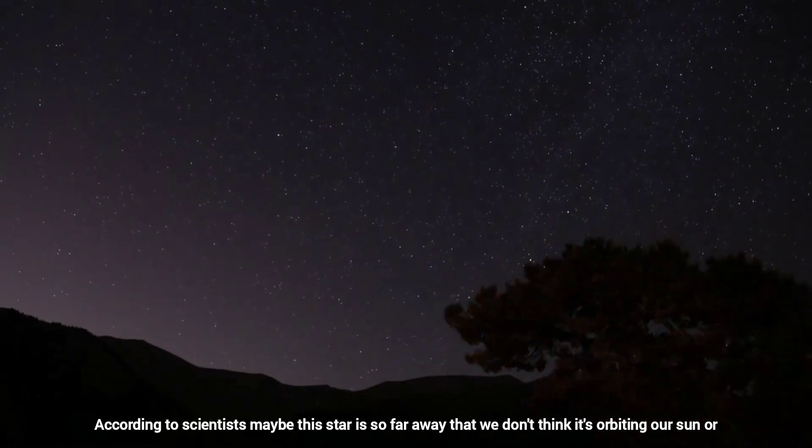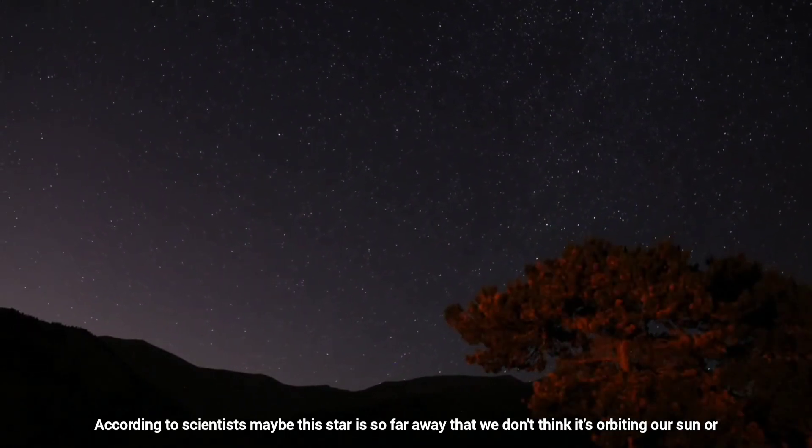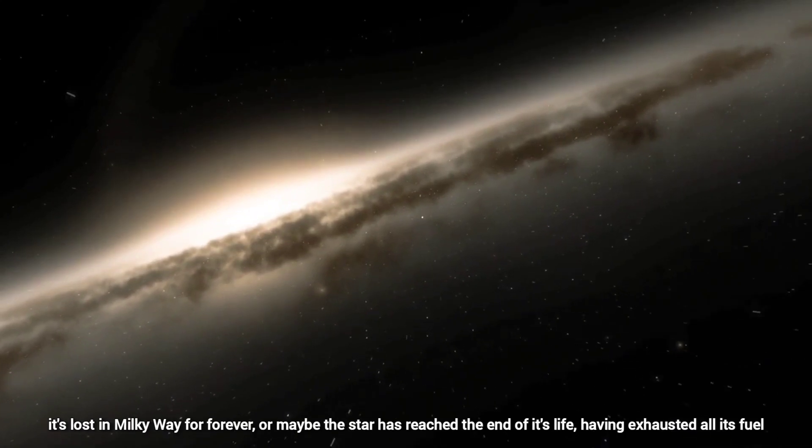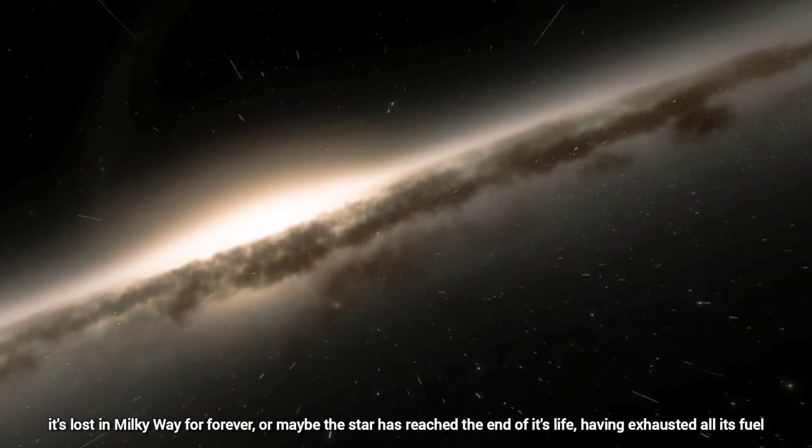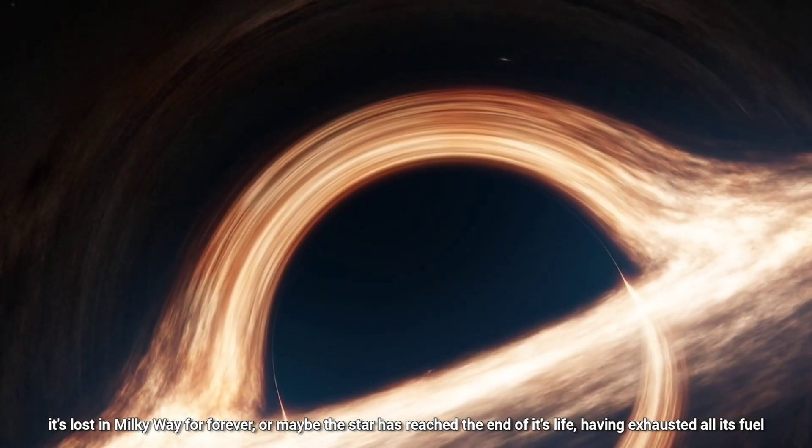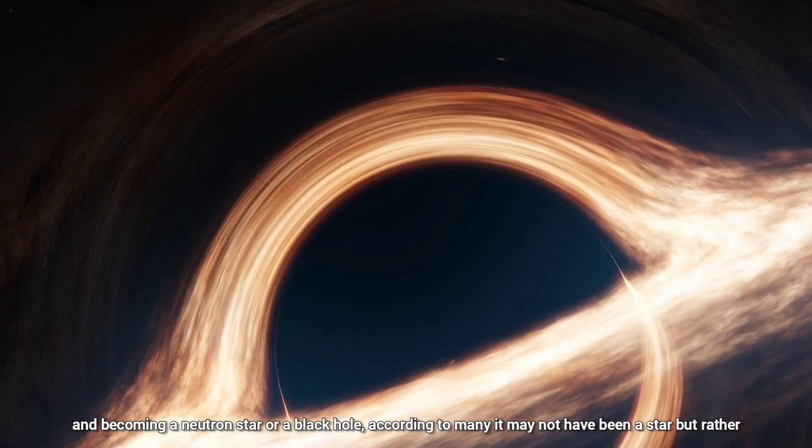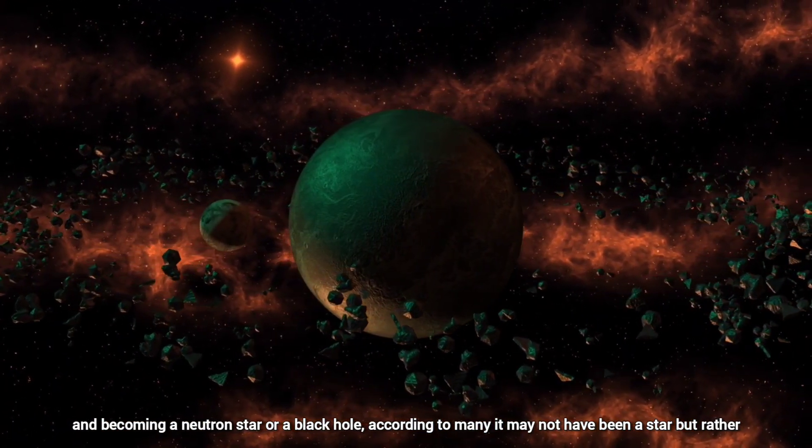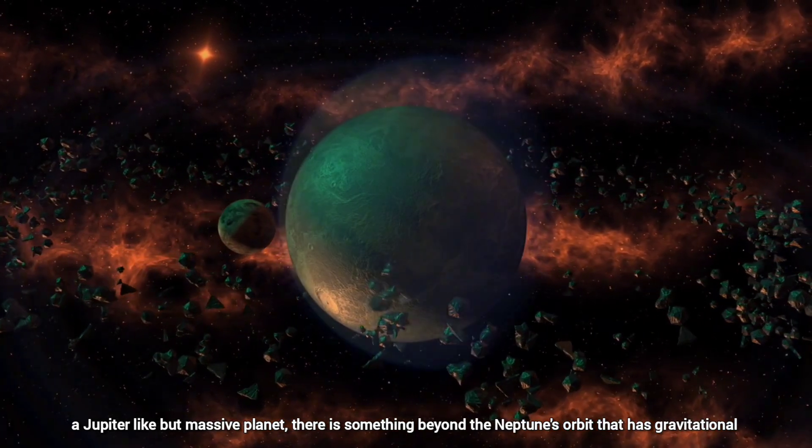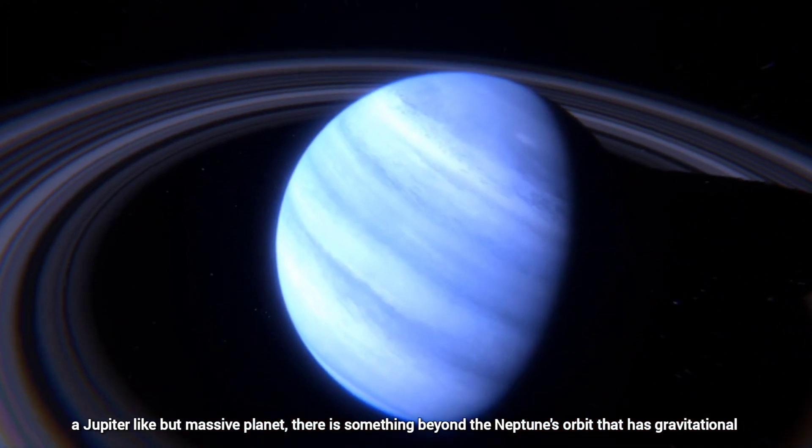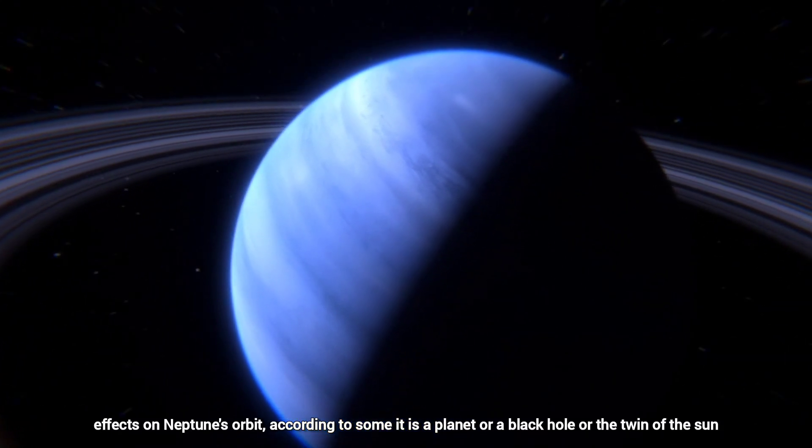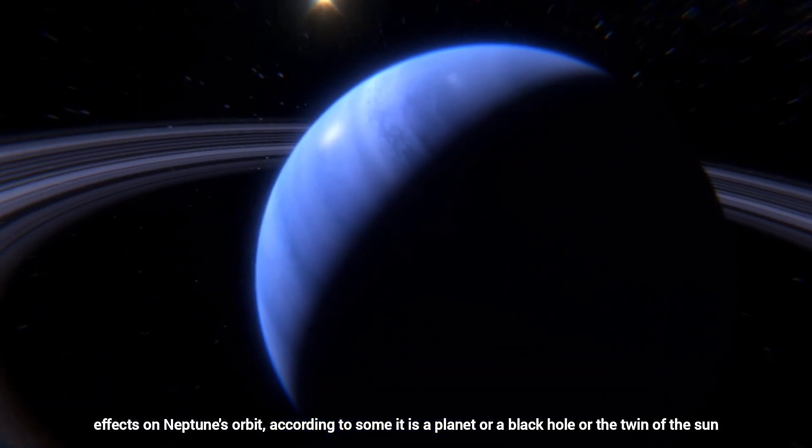According to scientists, maybe this star is so far away that we don't think it's orbiting our Sun or it's lost in the Milky Way forever. Or maybe the star has reached the end of its life, having exhausted all its fuel and becoming a neutron star or a black hole. According to many, it may not have been a star but rather a Jupiter-like but massive planet. There is something beyond Neptune's orbit that has gravitational effects on Neptune's orbit. According to some, it is a planet or a black hole or the twin of the Sun.